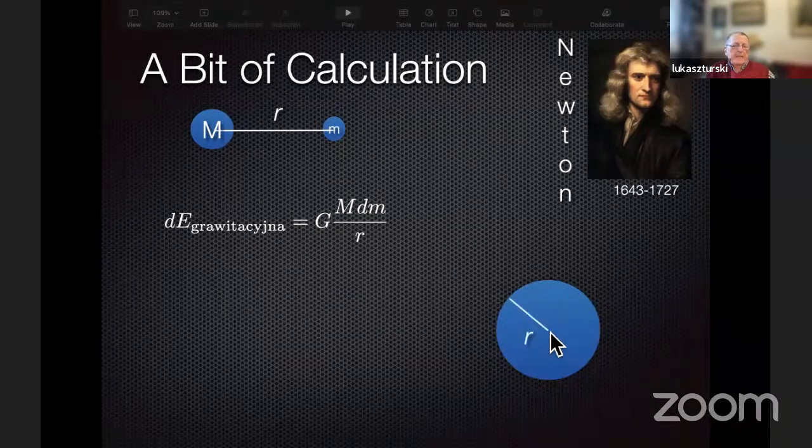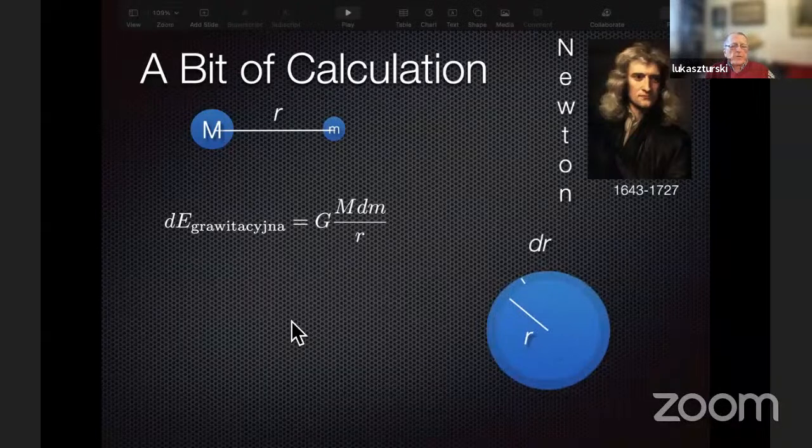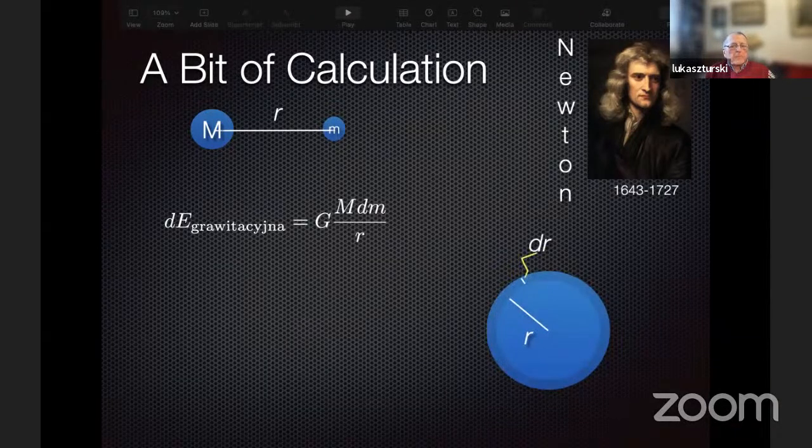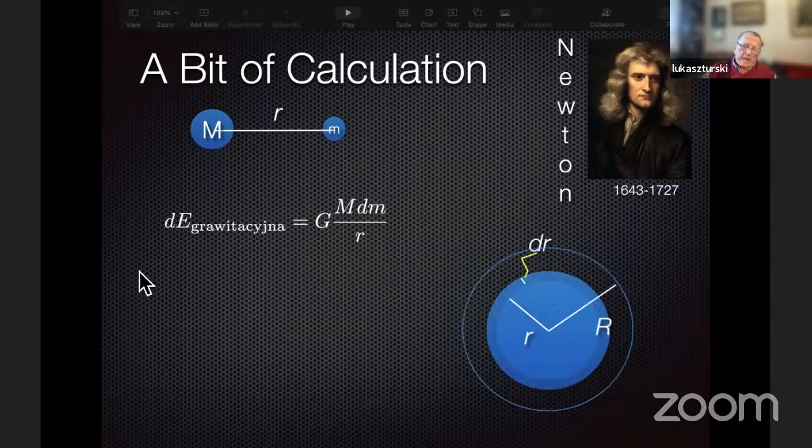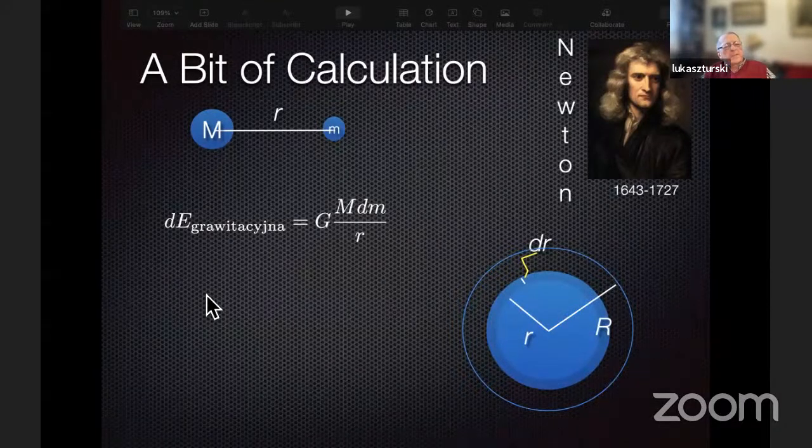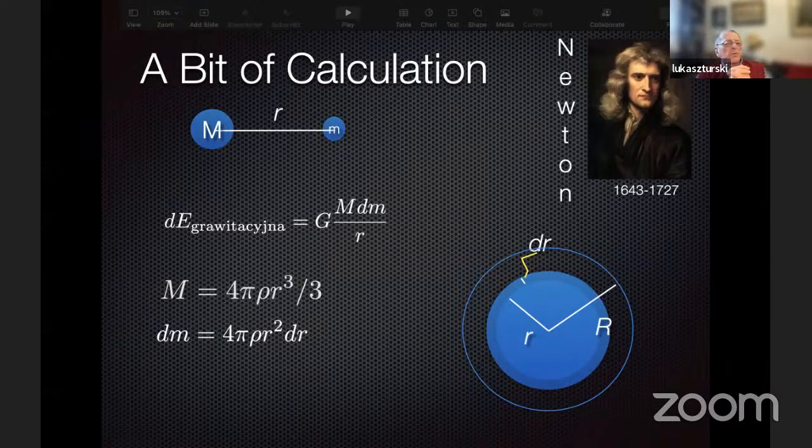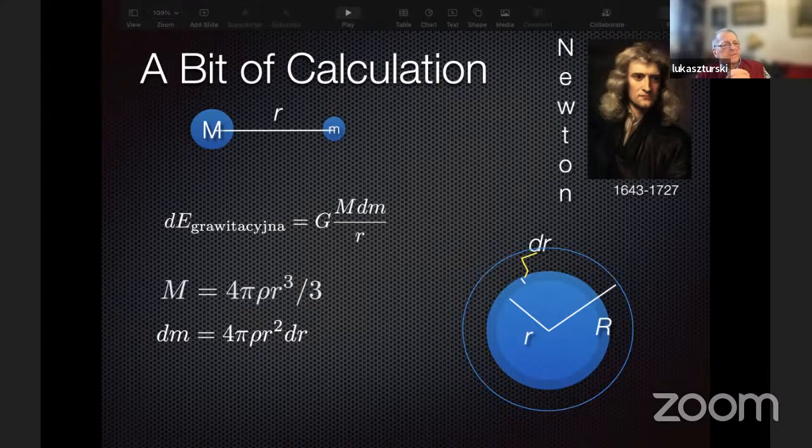I can use this formula to calculate the content of the gravitation energy which is stored in a planet with a given radius and a given density. This is a simple calculation which, when I was young, could have been done even in high school. The mass of a planet is proportional to the radius cubed and to the density.